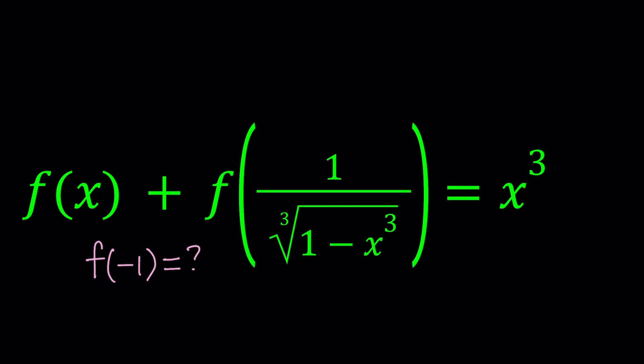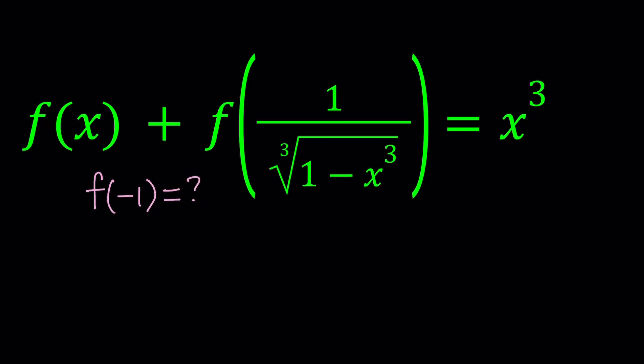Hello everyone. In this video we're going to be solving a nice functional equation. We're given that f(x) + f(1 / ∛(1 − x³)) = x³, and we're going to be finding the value of f(−1). We're also going to talk about whether we could possibly find an expression for f(x) or any other value. This problem is from Turkey Math Olympiads, and it's a really nice problem, kind of on the easier side. So we're going to be solving for f(−1), and it makes sense to replace x with −1.